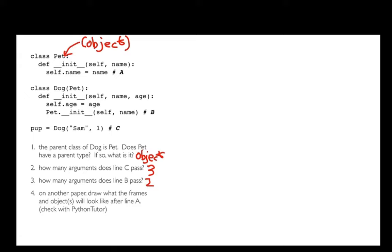Fourth question, the most complicated, is on another piece of paper, what do these frames look like as I'm basically running this code? So let's take a crack at that. The first thing I really like to do when I'm tracing through code like this is I like to draw a boundary.